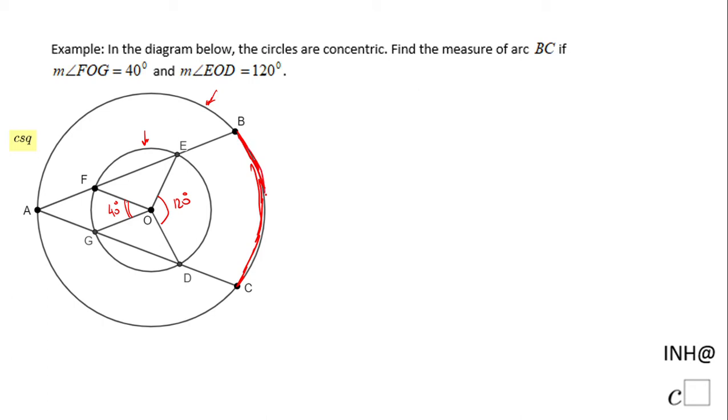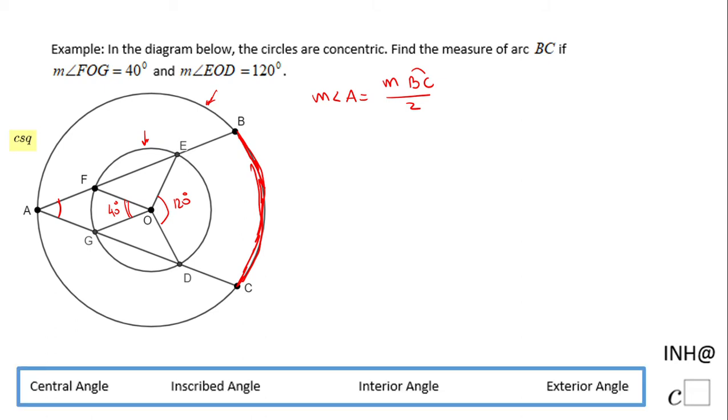For finding the measure of arc BC, we need to find the measure of angle A. The measure of angle A will be half of the measure of arc BC. Why? Because angle A is what we call an inscribed angle, and that is half of the measure of the intercepted arc, in this case BC.